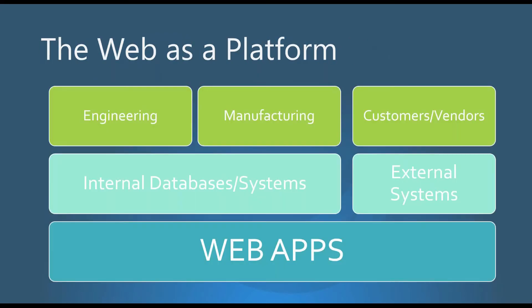This chart shows the web as a platform. Instead of trying to synchronize all your different systems by pushing and pulling data between them, we leverage their unique capabilities to create powerful web applications. These web applications can be unique to each department within your company. For example, engineering could have features for creating ECRs, approving files for manufacturing, and viewing project status. Manufacturing could see up-to-date drawings, request changes, or view a work order from ERP. Purchasing could send up-to-date drawings to vendors, or vendors could have direct access to specific information they need.